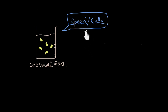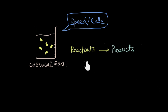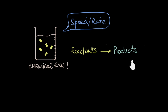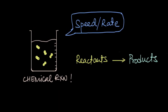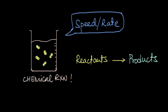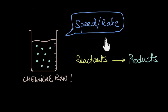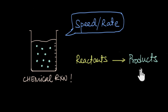So how do we measure the speed or the rate of a chemical reaction? In any chemical reaction there are reactants that are converted into the products. This conversion can be fast or it can be slow. So the speed or the rate of a chemical reaction should be thought of as how fast the reactants get converted into the products.